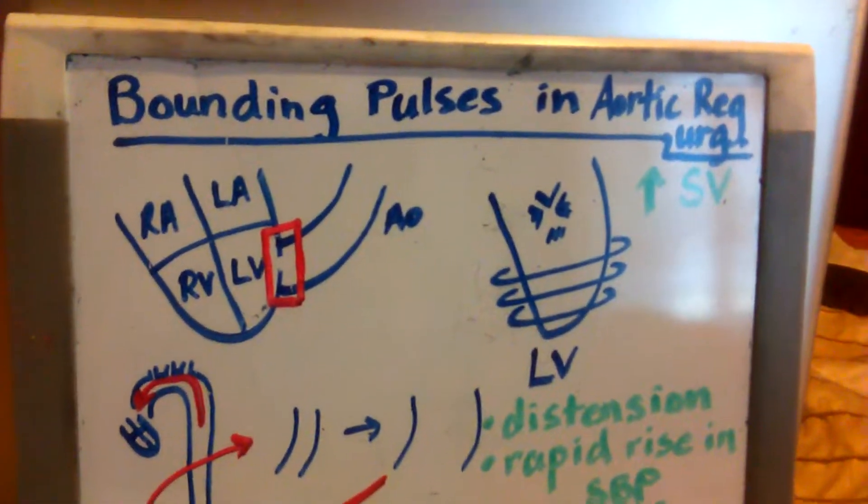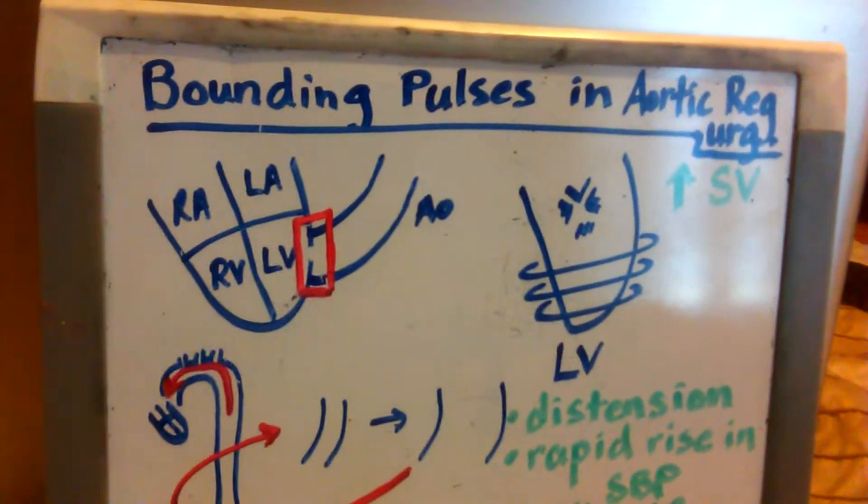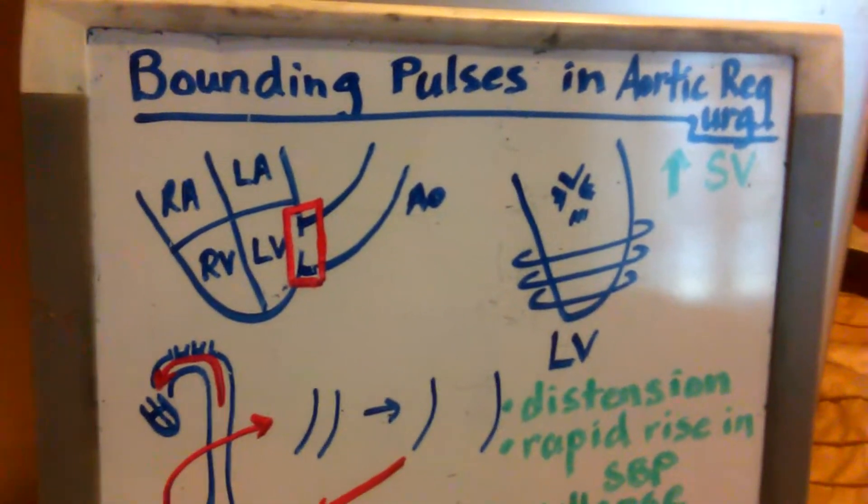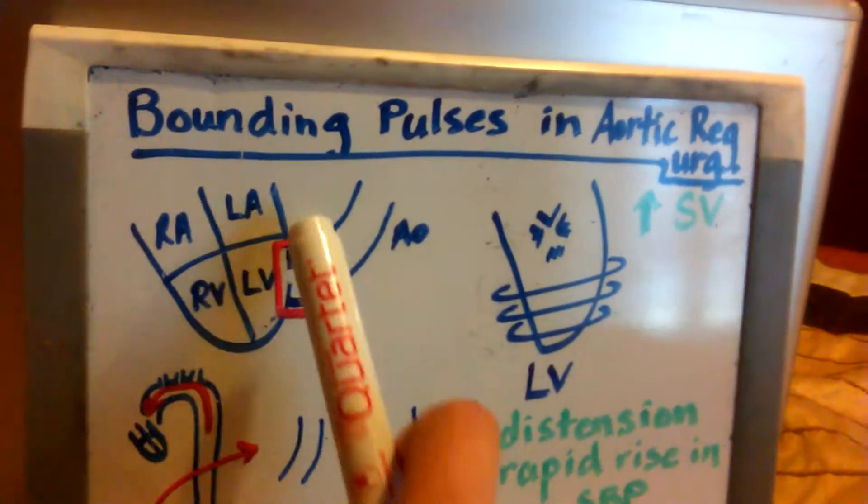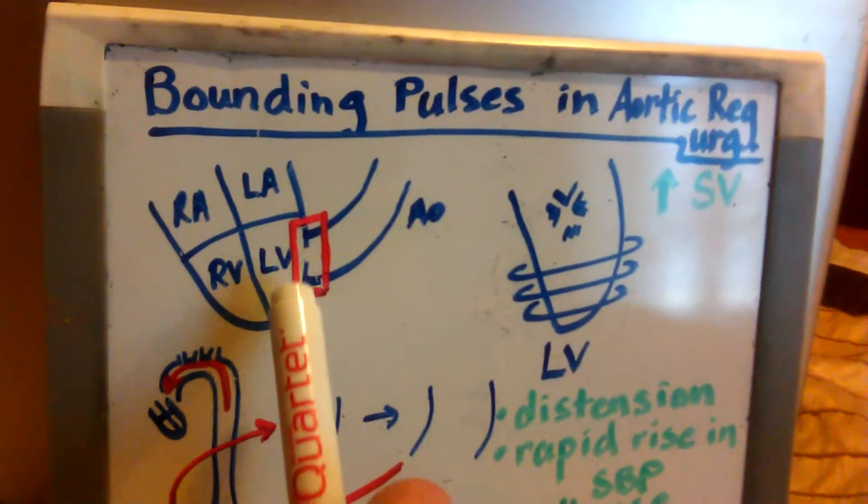Now, what happens in aortic regurgitation is the valvular defect of the aortic valve makes it unable to fully close during diastole, and so you have return of blood back into the left ventricle.